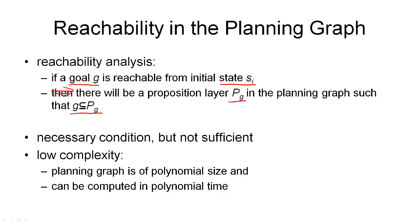Looking at it the other way around: if a goal condition G is not contained in our final planning graph layer PG, then that goal condition cannot be achieved within this planning graph, meaning the overall goal can't be achieved. This gives us a necessary condition for when a solution must exist, but not a sufficient condition.